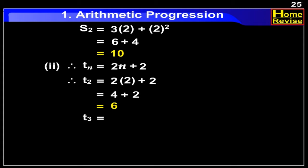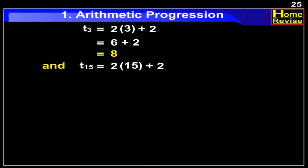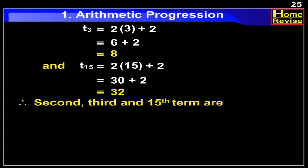Similarly, T3 is equal to 2 into 3 plus 2, equal to 6 plus 2, which is equal to 8. And T15 is equal to 2 into 15 plus 2, which is equal to 32. Therefore, the 2nd, 3rd and 15th terms are 6, 8, and 32 respectively.